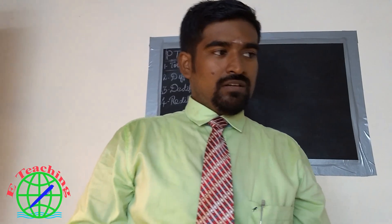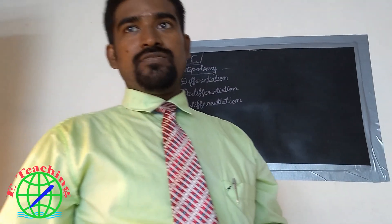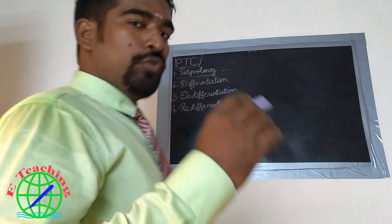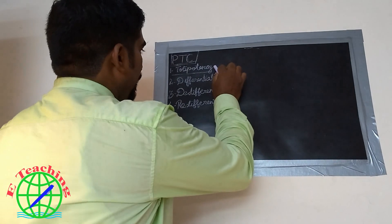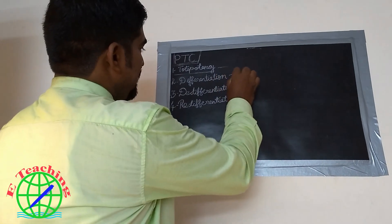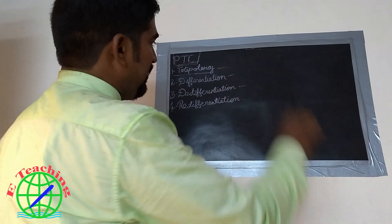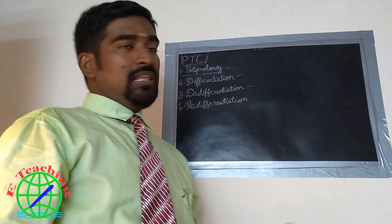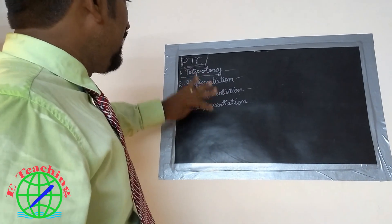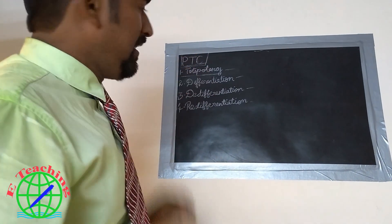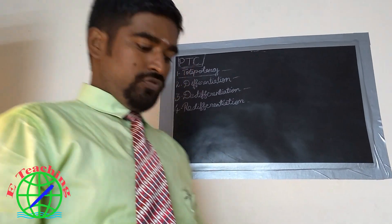The basic concept of Plant Tissue Culture is based on four characters, which are: totipotency, differentiation, de-differentiation, and re-differentiation. These four characters form the basis of Plant Tissue Culture techniques.